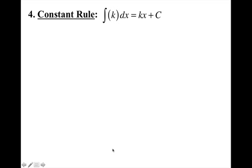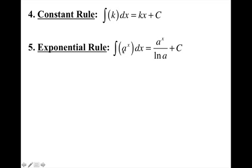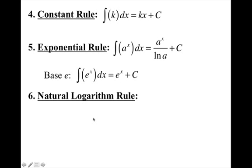The constant rule: the antiderivative of a constant is the constant times x plus C. The exponential rule: the antiderivative of a to the x is equal to a to the x over the natural log of a, plus C. And of course with base e, the antiderivative of e to the x is just e to the x plus C, because the derivative of e to the x is itself. The natural logarithmic rule: the integral of 1 over x dx equals the natural log of the absolute value of x plus C, because the derivative of ln x is 1 over x.